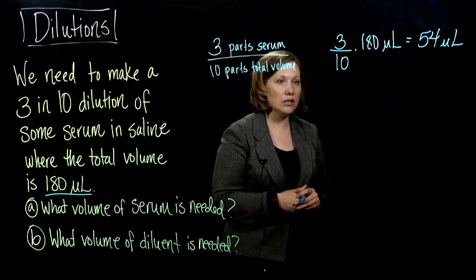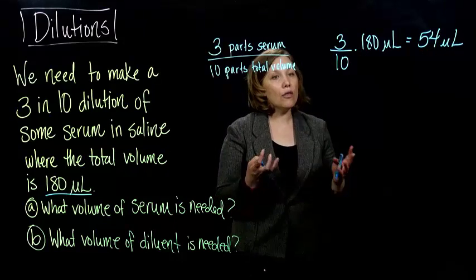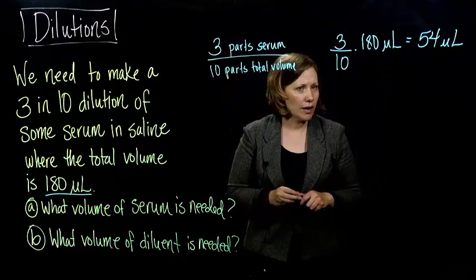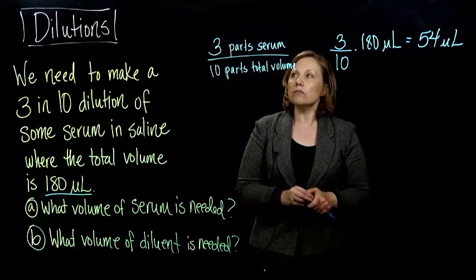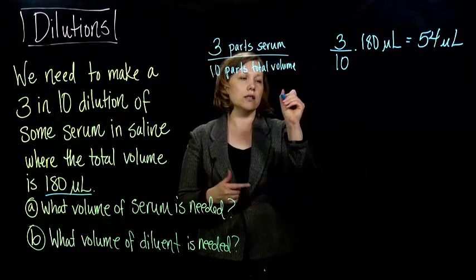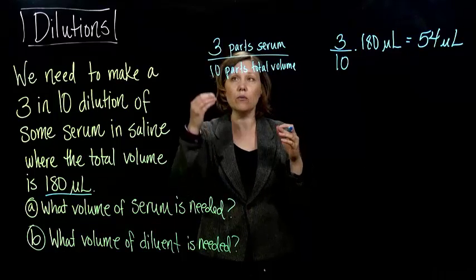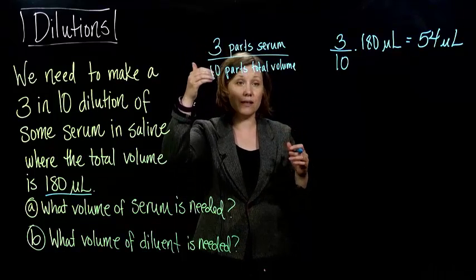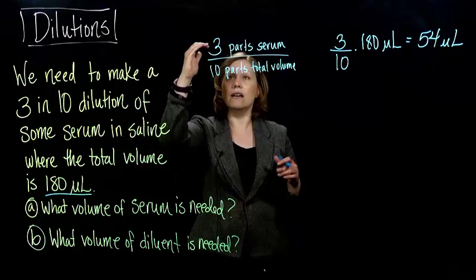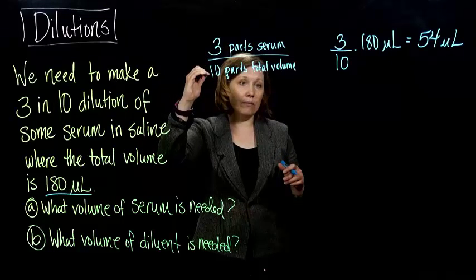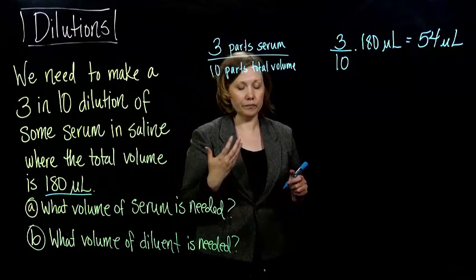So that's how much serum we should have. The other way that these types of problems are done, and this is the way that they show you how to do it in your textbook, they have 3 parts serum, they set up a proportion. We want to keep the same proportion. If we're having this dilution, 3 to 10, or 3 and 10, we need 3 parts serum to 10 parts total volume.